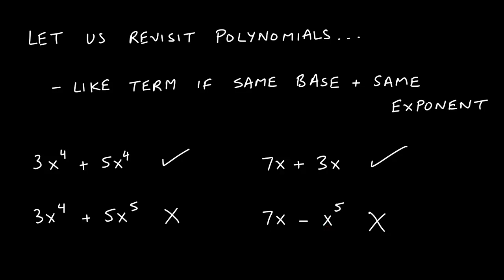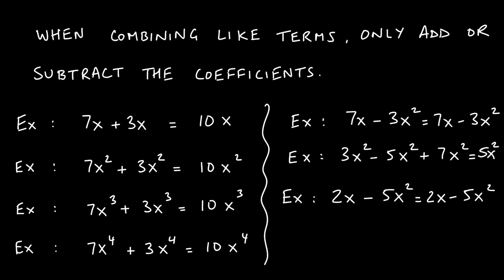Two terms are like terms with polynomials if they have the same base and the same exponent — those are the requirements. Also, when we combine like terms, we only ever add or subtract the coefficients; we don't touch the variable or the power. So these examples all do the same exact thing.